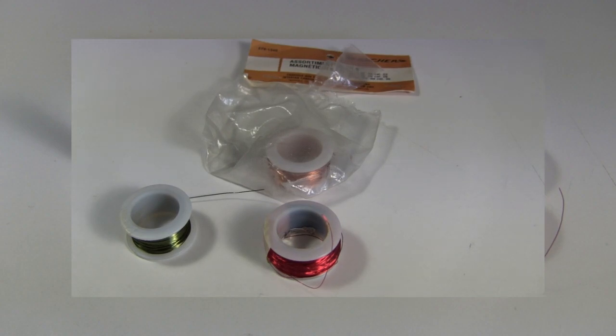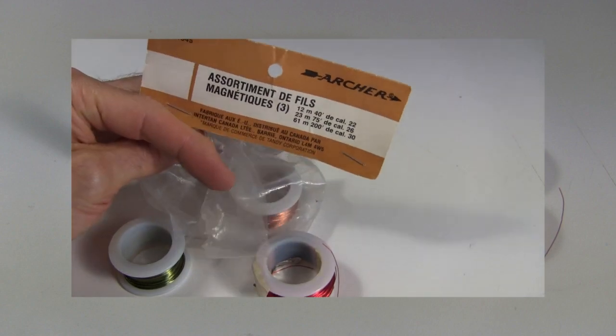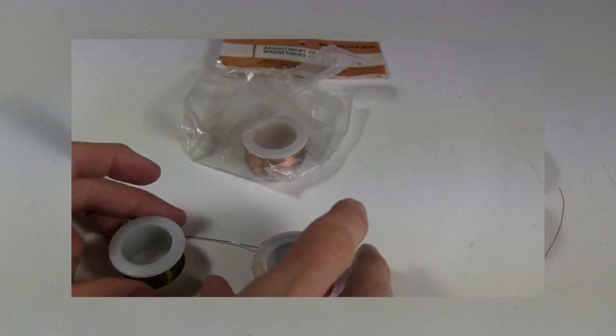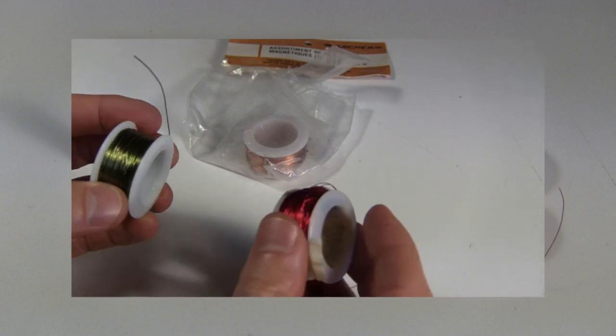You'll also need some thin insulated wire. This is a kit which I bought from RadioShack many years ago. In it I have a 30 gauge, 26 gauge, and 22 gauge, so I'm going to use the 30 and the 26.